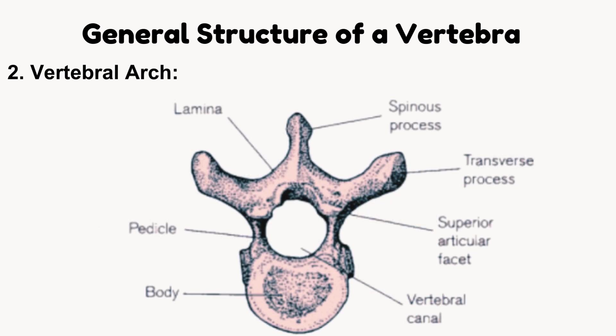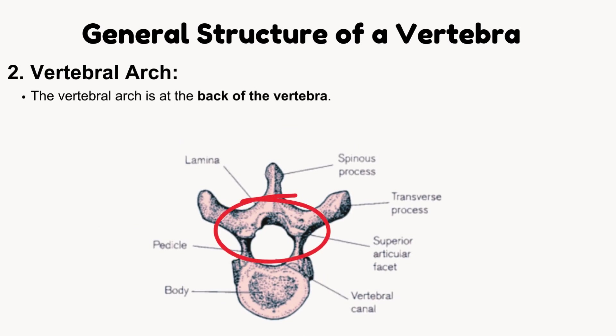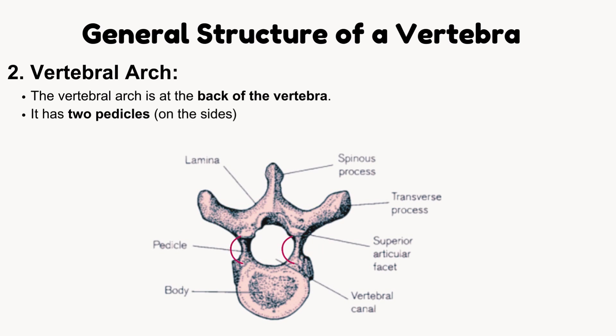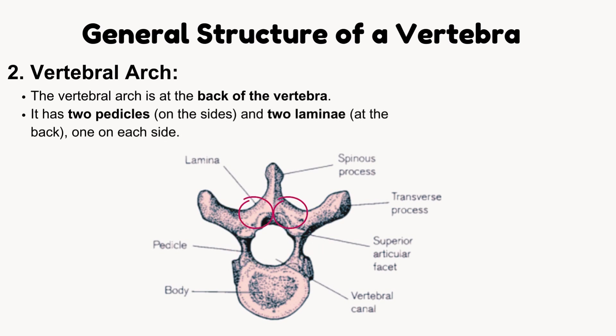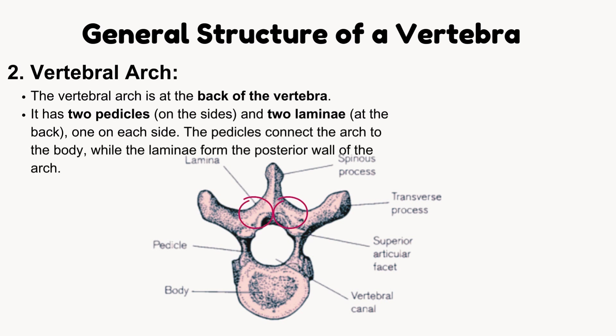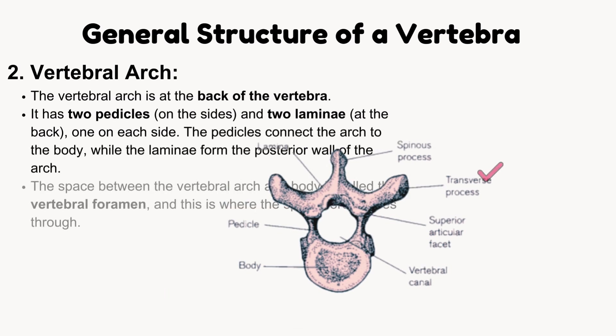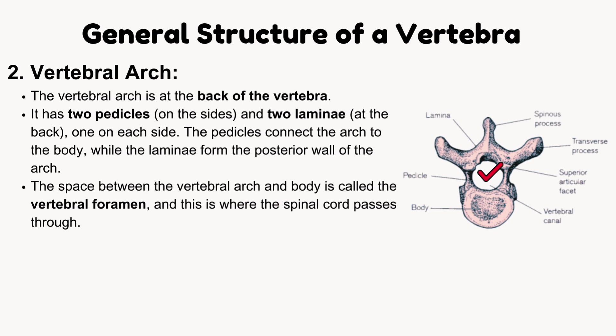Vertebral arch. The vertebral arch is at the back of the vertebra. It has two pedicles on the sides and two laminae at the back, one on each side. The pedicles connect the arch to the body, while the laminae form the posterior wall of the arch. The space between the vertebral arch and body is called the vertebral foramen — this is where the spinal cord passes through.